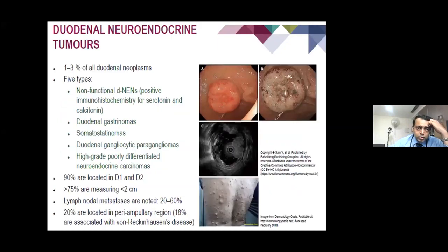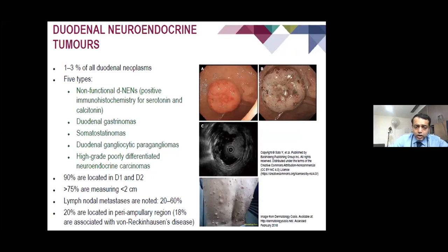Duodenal neuroendocrine tumours account for 1–3%. They are mostly non-functional but may include duodenal gastrinomas or somatostatinomas. 90% are located in D1 and D2, and mostly they are less than 2 cm, offering the option of endoscopic resection. If they are 2 cm and infiltrating into the submucosa and muscularis propria, full surgery is required.